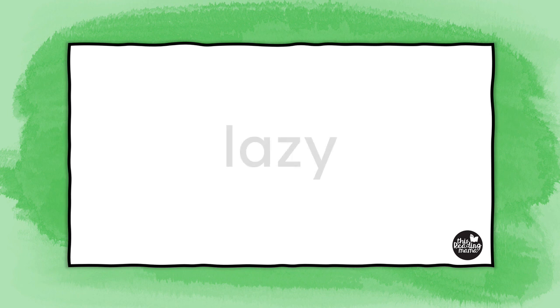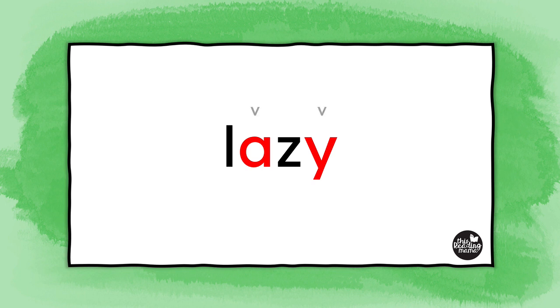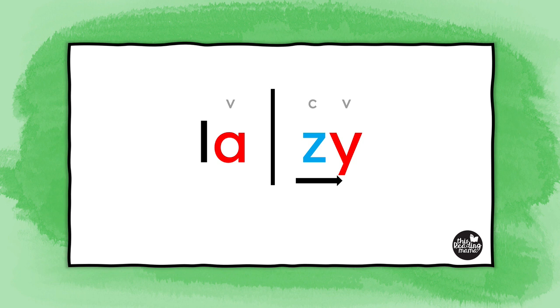After your learners can identify and read words like robot and tiger, try words with two open syllables like lazy. Open syllables with a Y on the end are a little trickier because the final Y is going to act like a vowel. So when your learners first find the vowels, they need to know that Y is a vowel in this word — not a consonant. Once the vowels have been found, look in between the vowels. There's only one consonant, and once again we have a V-C-V pattern. The middle consonant usually goes with the second syllable.